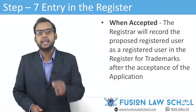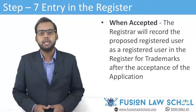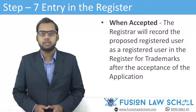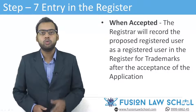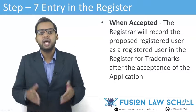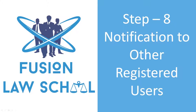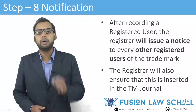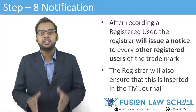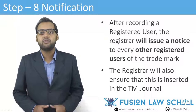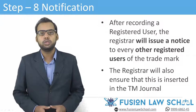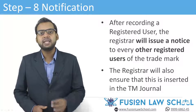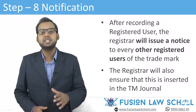The seventh step is entry in the register. Where an application is accepted, the registrar will record the proposed registered user as a registered user in the Register of Trademarks, and the date on which the application was made will be deemed to be the date of registration. The eighth and last step is notification to other registered users, if any, and publication. After recording a registered user, the registrar will issue a notice in the prescribed manner to every other registered user of the trademark, if any. The registrar will also ensure that this fact is inserted in the Trademark Journal within three months of such entry in the register.